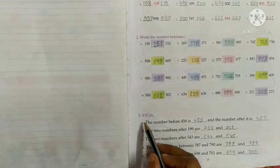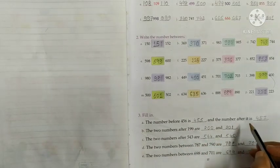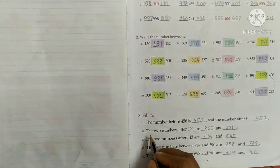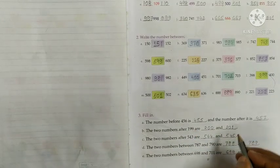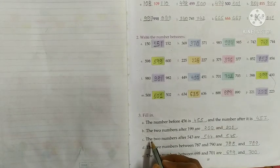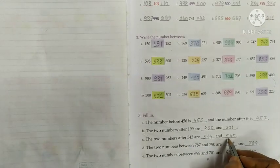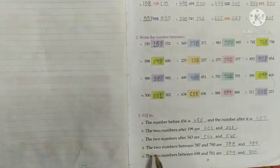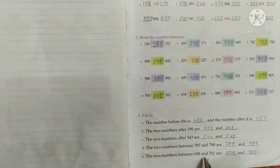Question 3, fill in. The number before 456 is 455 and the number after it is 457. The two numbers after 199 are 200 and 201. The two numbers after 543 are 544 and 545. The two numbers between 787 and 790 are 788 and 789. The two numbers between 698 and 701 are 699 and 700.